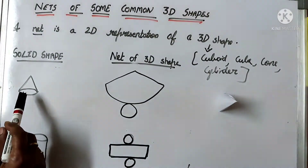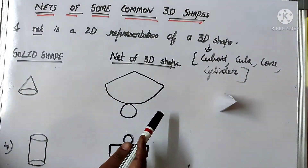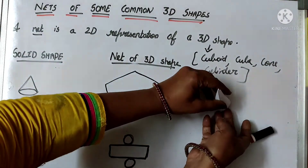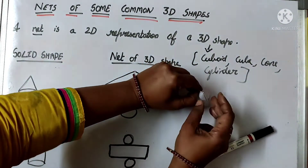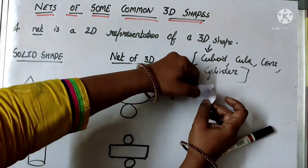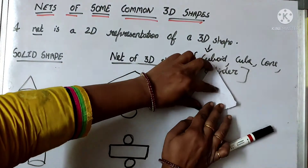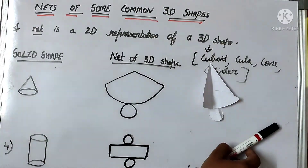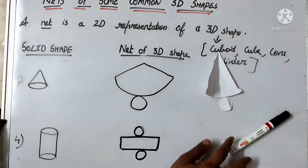The next solid shape is a cone. Now what is the net of a cone? If you open the cone, how will it appear? Suppose this is a cone — if you open it, will it get opened in this form? Yes, this is the net of a cone.